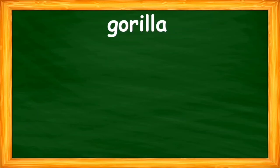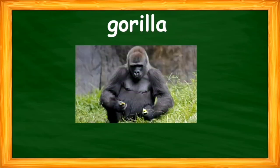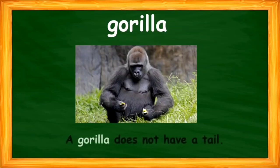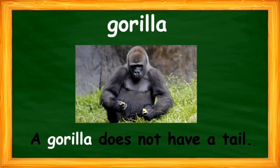Look at the word and read it — the word is 'gorilla'. Please repeat after me: gorilla. Let's see the image of a gorilla. What does 'gorilla' mean? Gorilla is a kind of wild animal, a kind of ape — black in colour and big in size. I have used the word 'gorilla' in a sentence like: a gorilla does not have a tail.